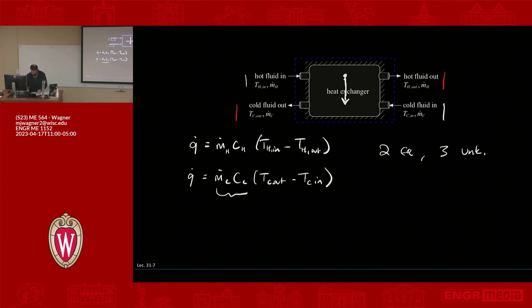This M dot C C C, this is something we call a capacitance rate. So that would be C dot C here or up here C dot H. We call this the capacitance rate. This is the product of the mass flow and the specific heat. It's just a way of saying this is how much energy this stream can carry per unit temperature.